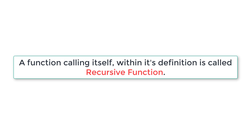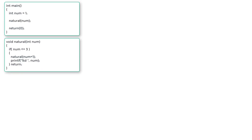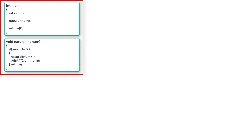I'll show you a simple example to understand the concept. Let's print natural numbers from 1 to 3 using recursive functions. Why just 1 to 3? Because you need to keep track of function instances and we don't have enough space on screen. Once you understand this, you could take 1 to 5, 1 to 10, or whatever you like.